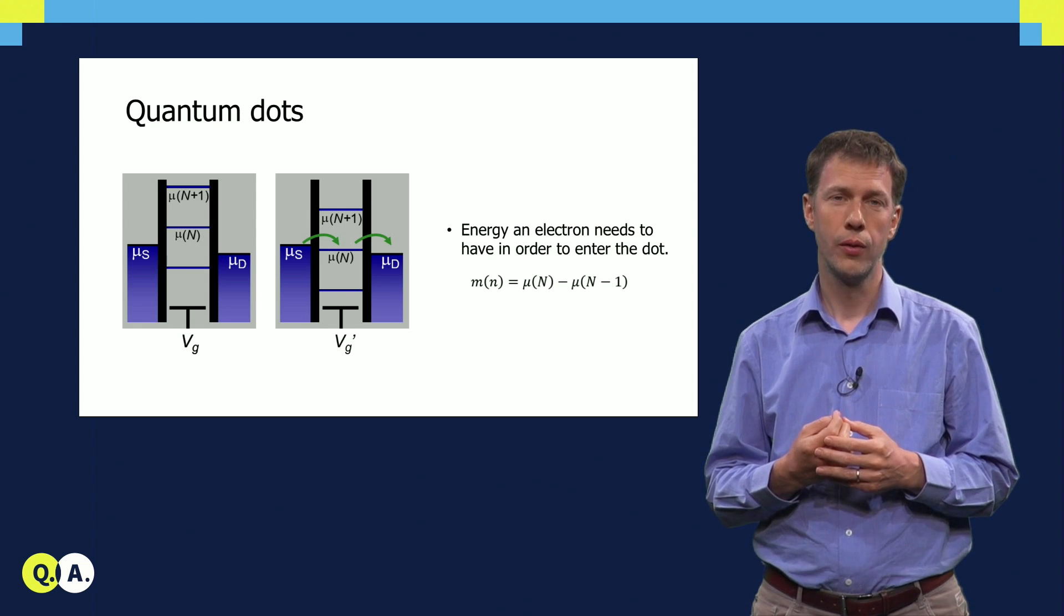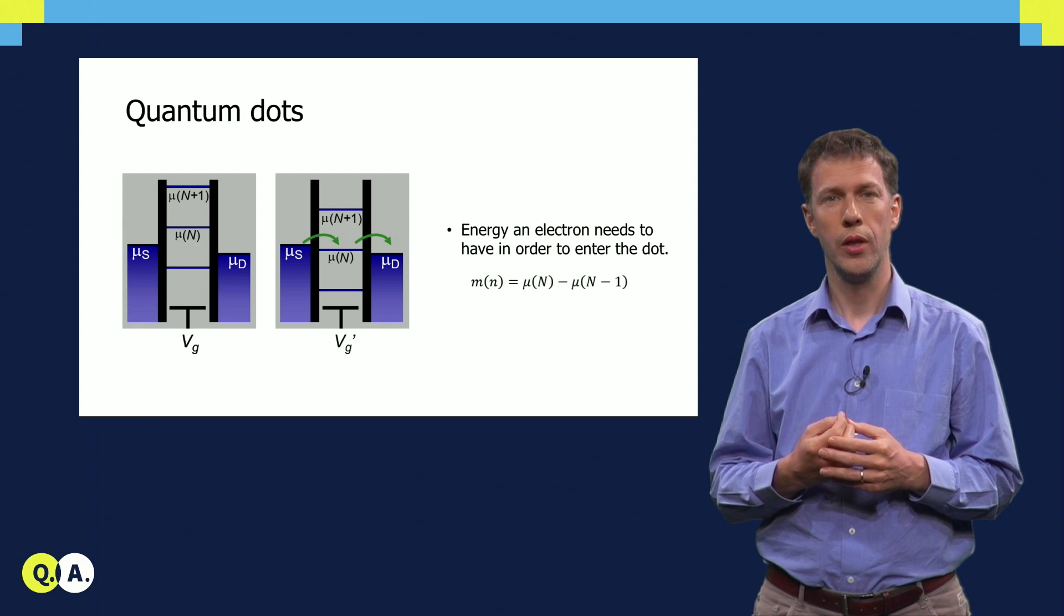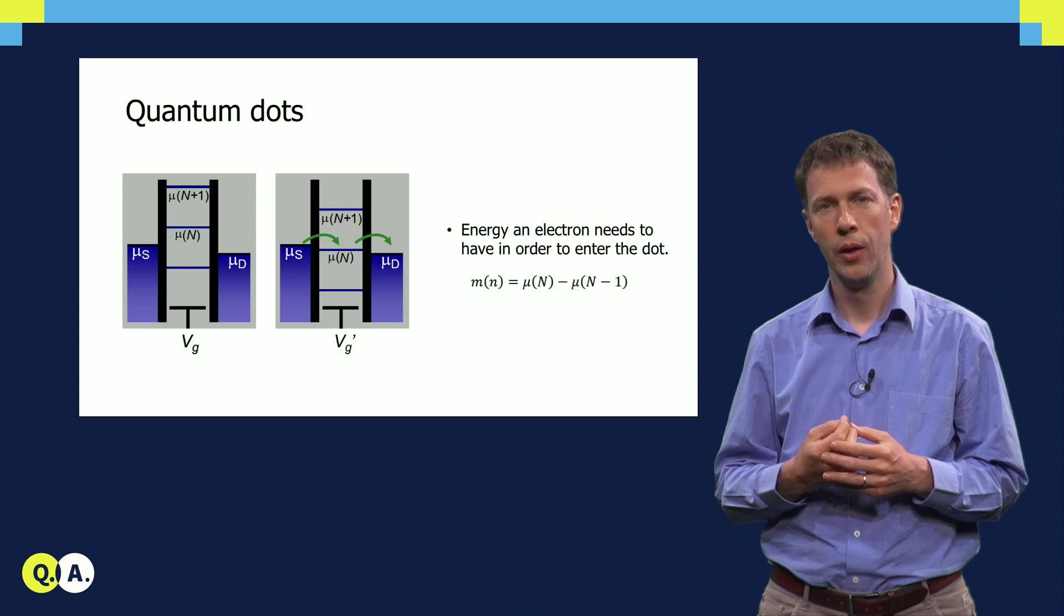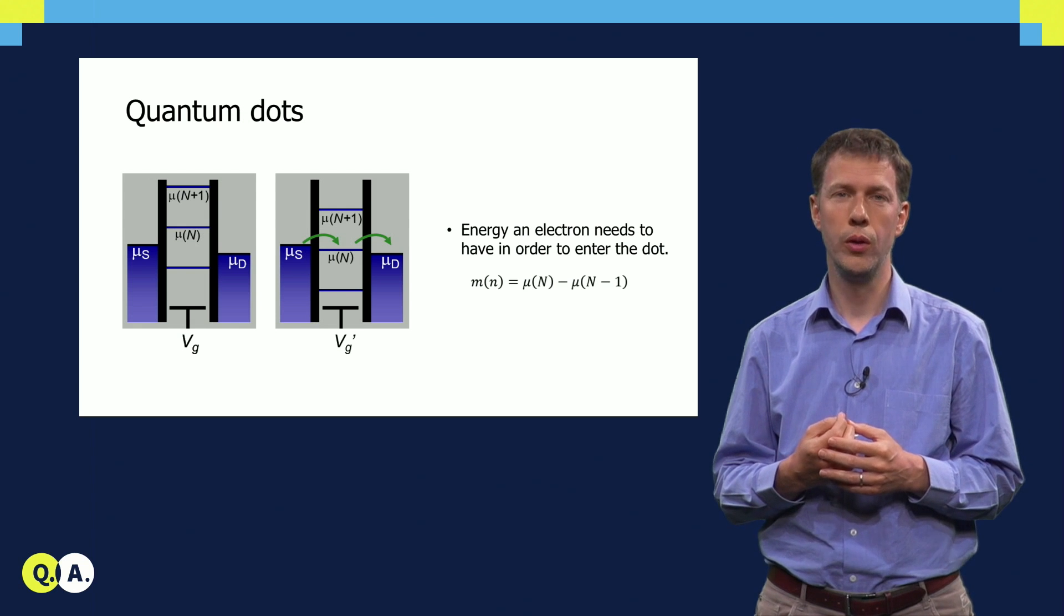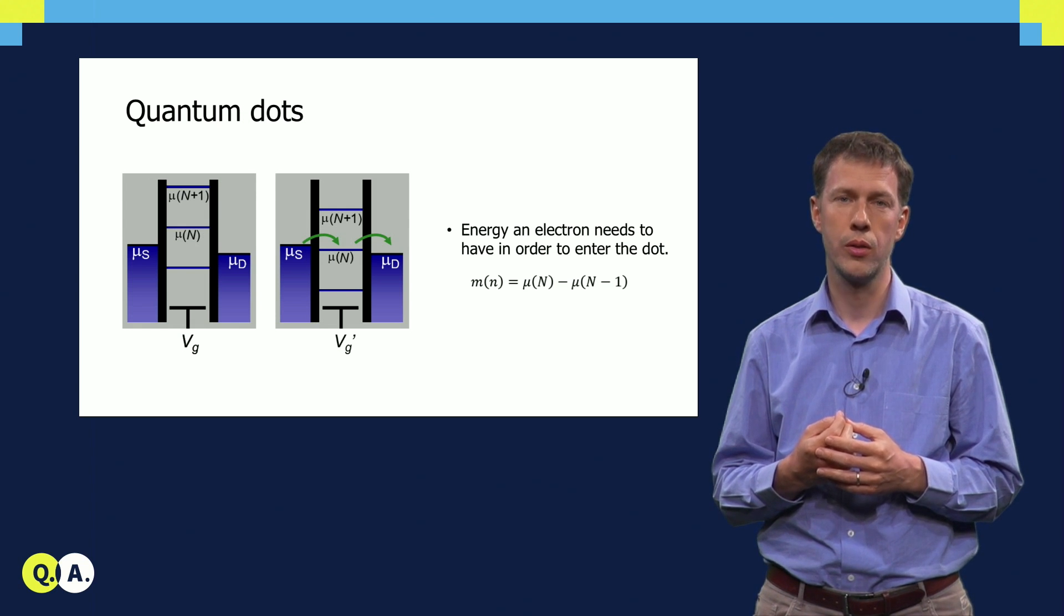In the configuration on the right, we have adjusted the gate voltages in such a way that the ladder comes down, and the electrochemical potential lies exactly within the window between the source and drain Fermi energies, or electrochemical potentials.